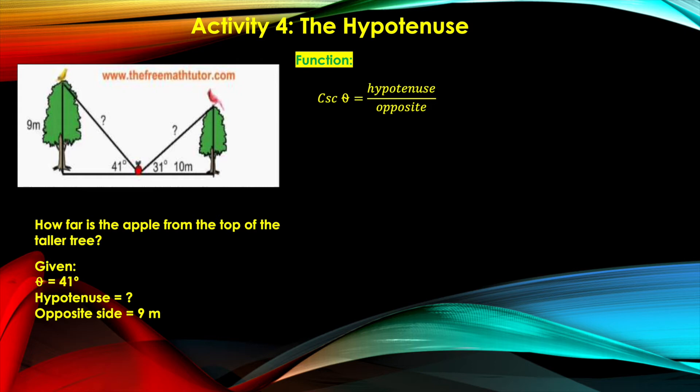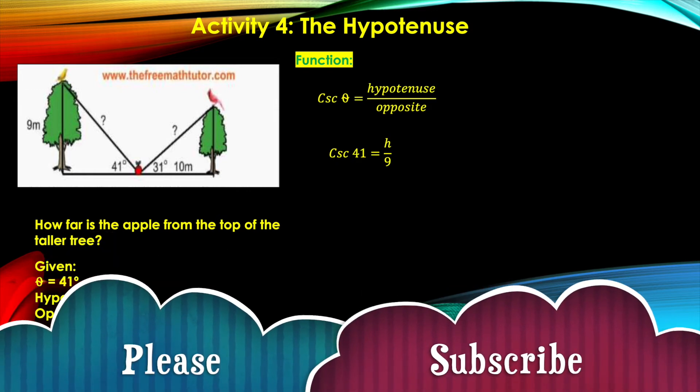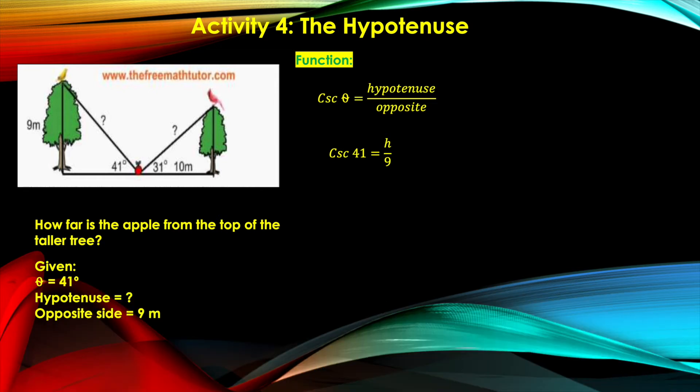Let's move on to substituting the values. Cosec θ is cosec 41° equals h divided by 9. Let's take h as the variable to represent the hypotenuse, and 9 here is the measure of the opposite side.